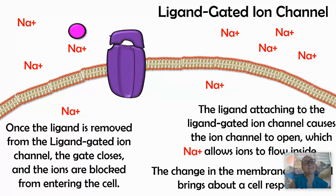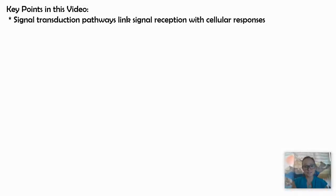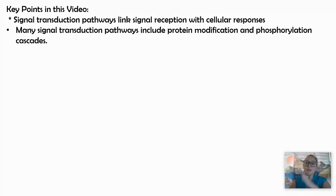That's probably the easiest of the three receptor proteins. For AP Bio, the key points are: signal transduction pathways link reception with a cell response — we saw epinephrine attaching and the cell response was an increase in blood sugar. Many signal transduction pathways include protein modifications and phosphorylation cascades — when proteins become active, they change shape and phosphorylate other proteins.